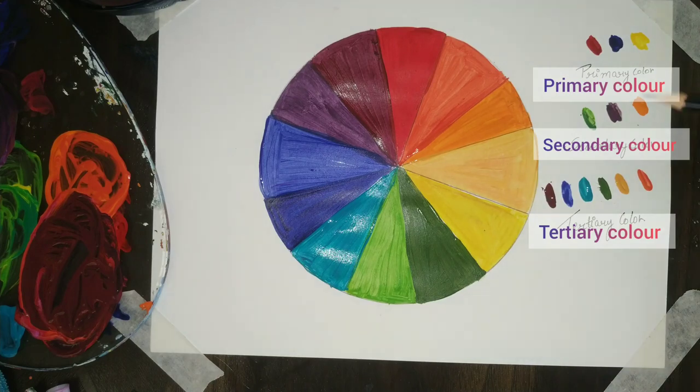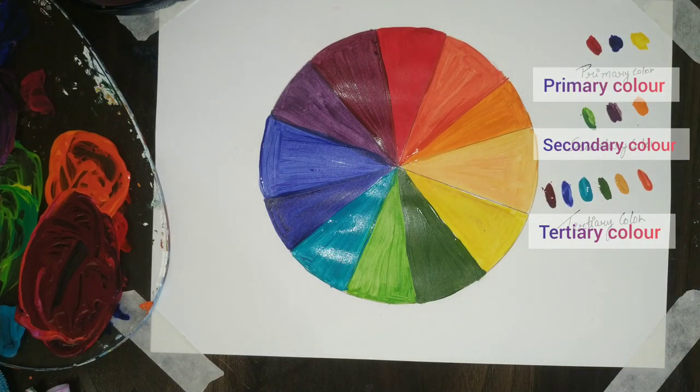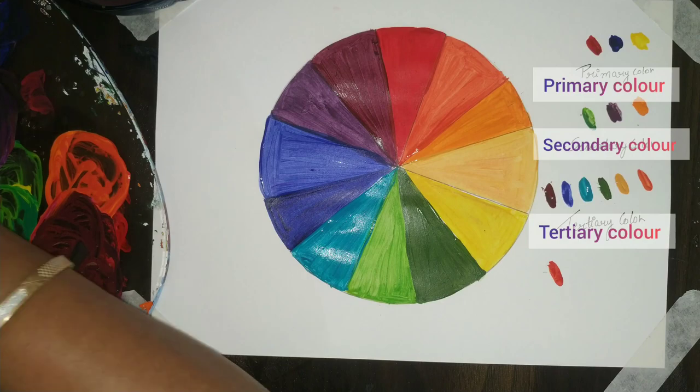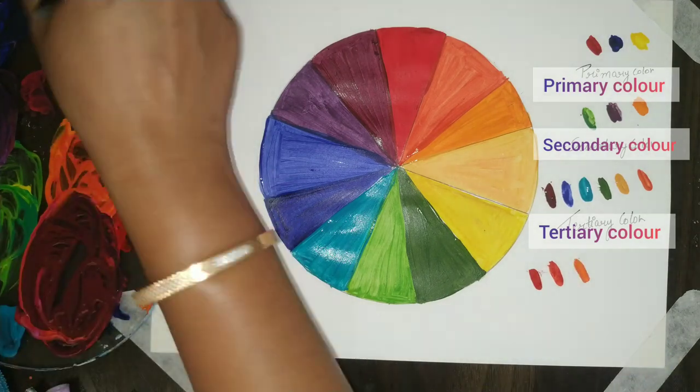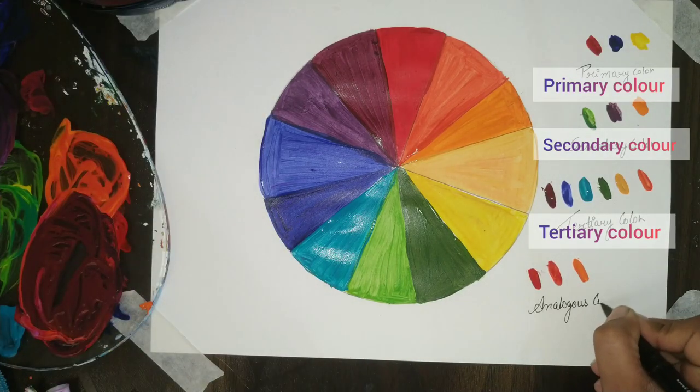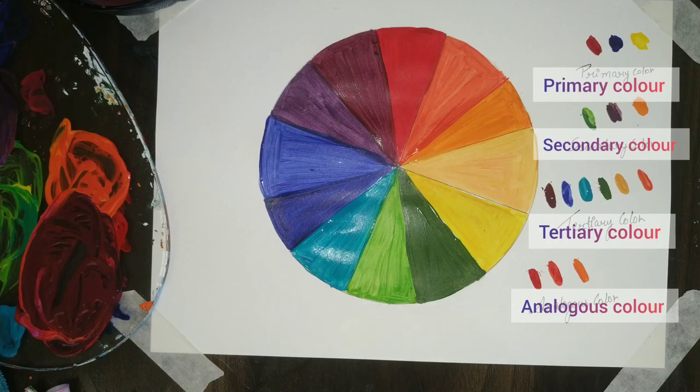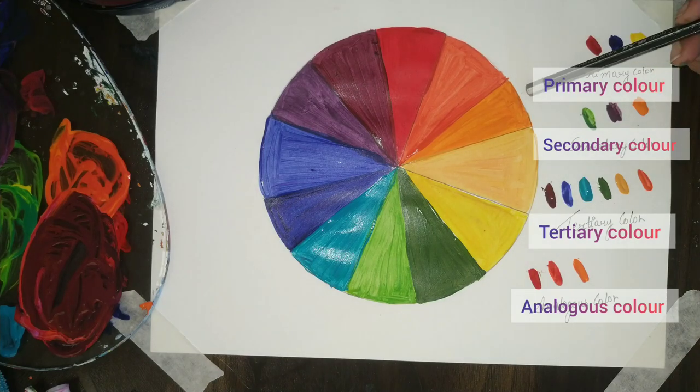Now we are going to learn analogous color. First would be reddish orange, red and orange. We can say analogous color, a color close to each other. Red, orange or reddish orange, they are close to each other.